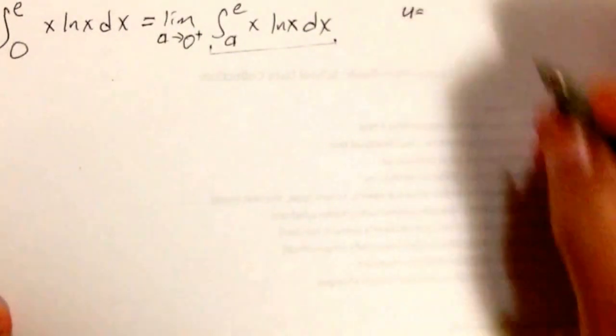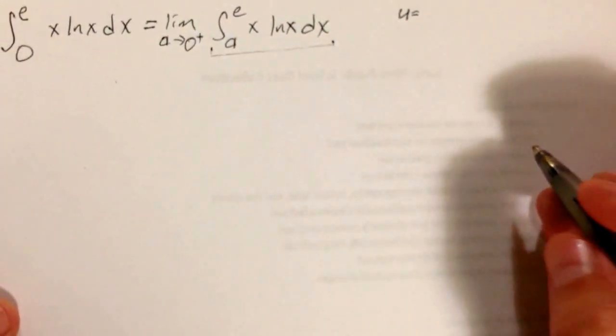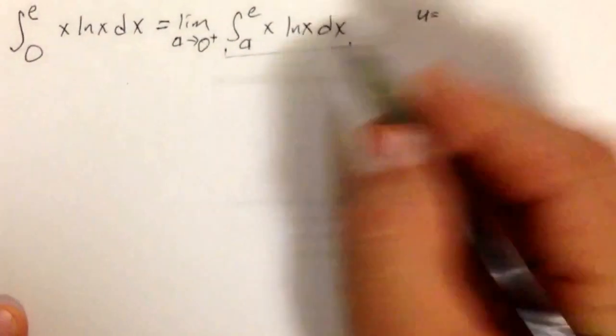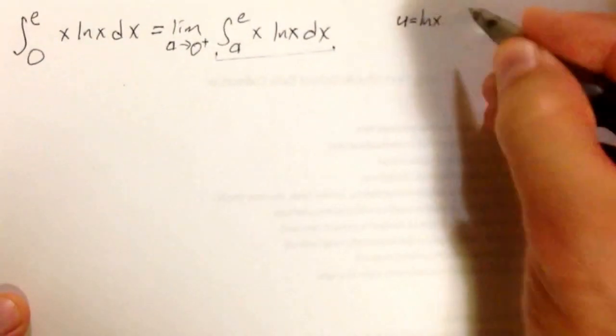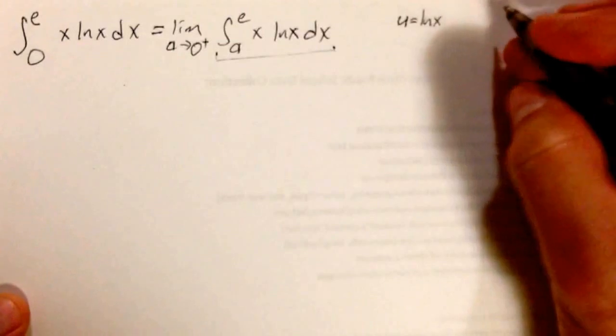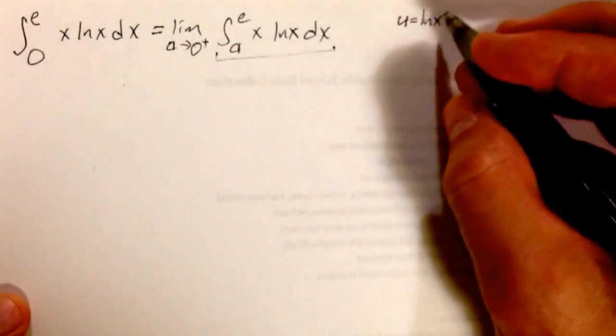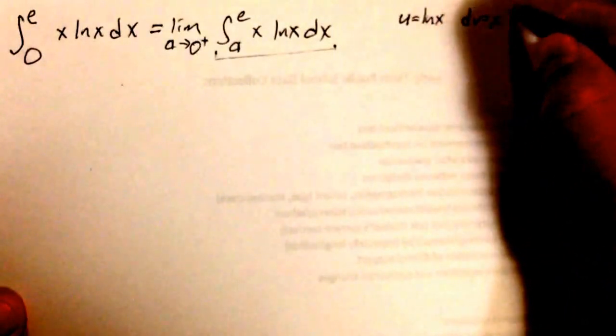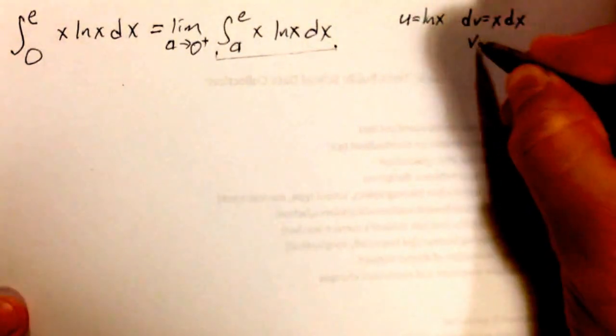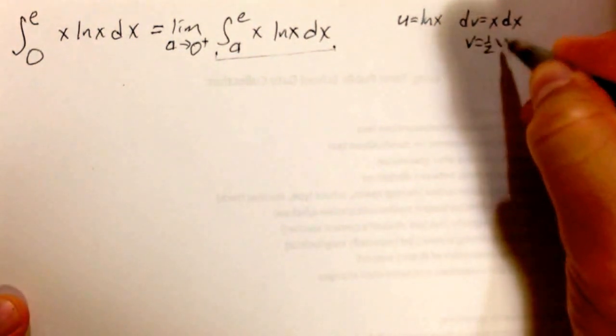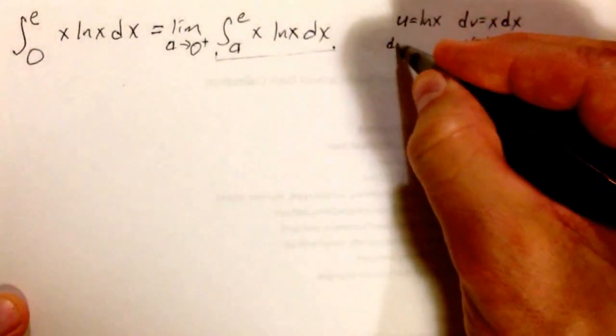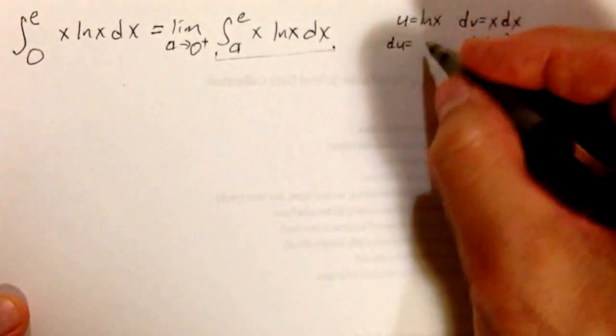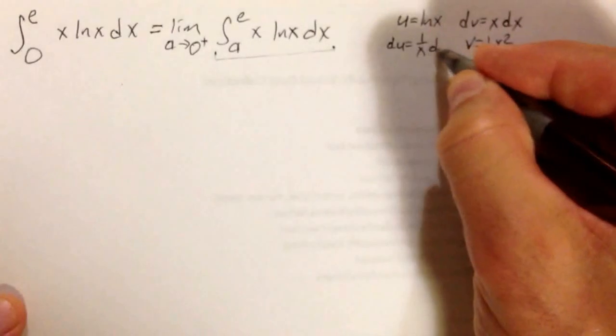My u, I want to be something that when I take the derivative gets simpler. How about natural log of x? Natural log is always a great candidate for u. That makes my dv equal to x dx. So my v is one-half x squared. My du is one over x dx.